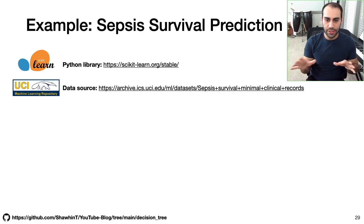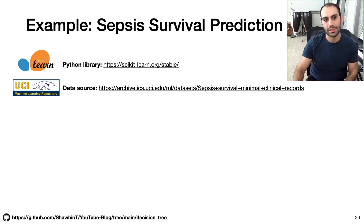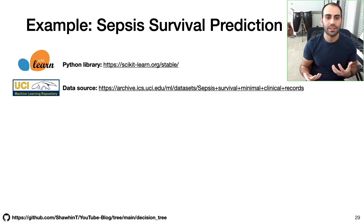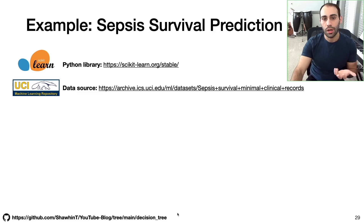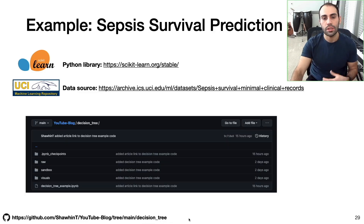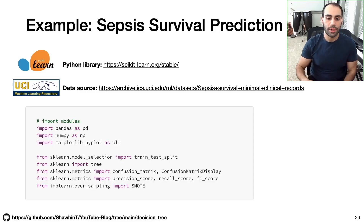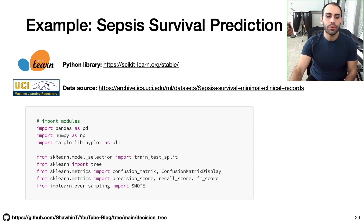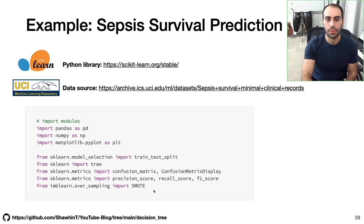With the theoretical foundation set, let's dive into a concrete example with code and data from the real world. We're going to do sepsis survival prediction using decision trees. We'll use the scikit-learn Python library, a very popular machine learning library, and a dataset from the UCI machine learning repository. All the code is available in the GitHub repository linked in the description. The first step is importing helpful Python libraries: Pandas for formatting data, NumPy for math and calculations, matplotlib for visualizations, several things from sklearn, and the SMOTE function to help balance our dataset.